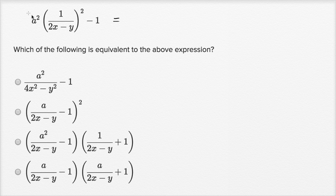This thing could be rewritten as a times one over two x minus y, and all of that squared, because notice, if you have a times this squared, that's the same thing as a squared times this thing squared, which is exactly what you have there.